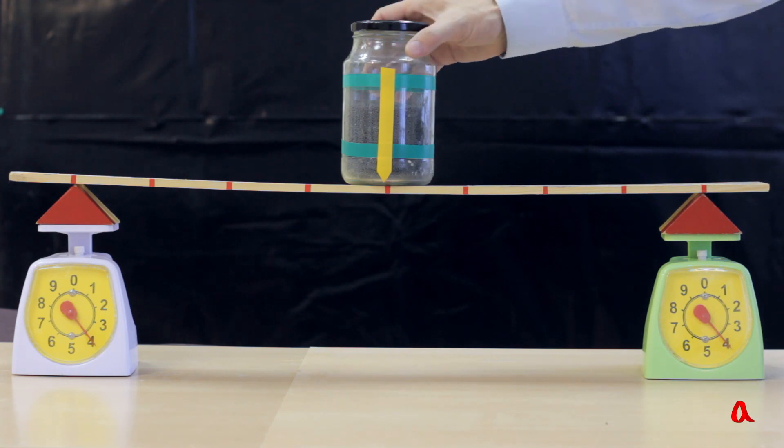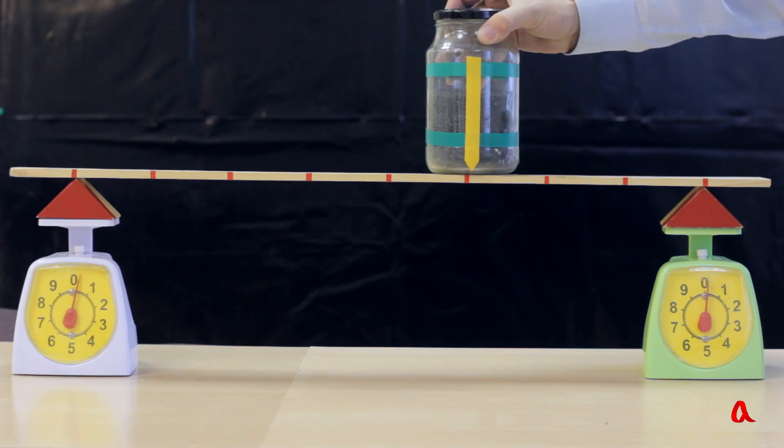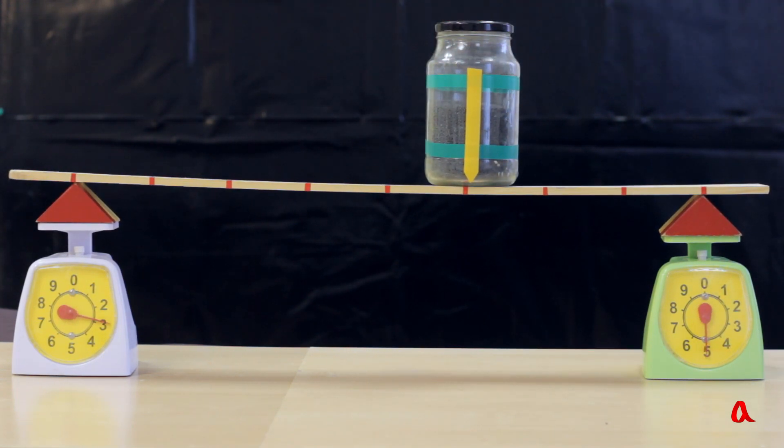Let's shift the load. Now the distance from the load to the supporting points has a 5 to 3 ratio and the scales readings have a 3 to 5 ratio.